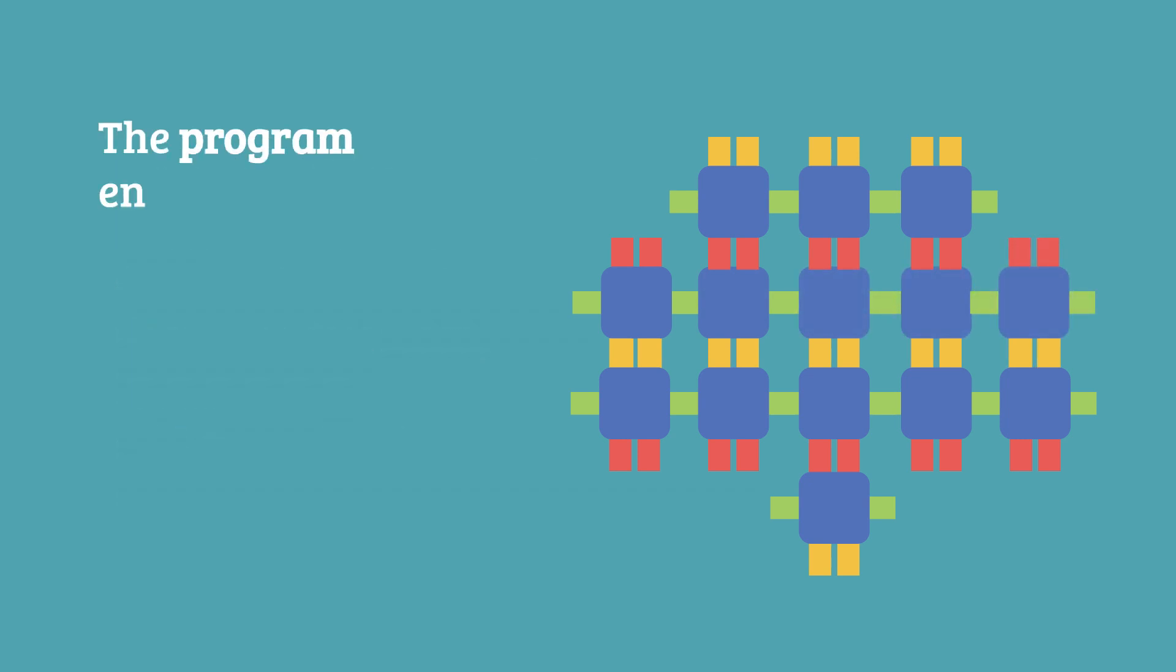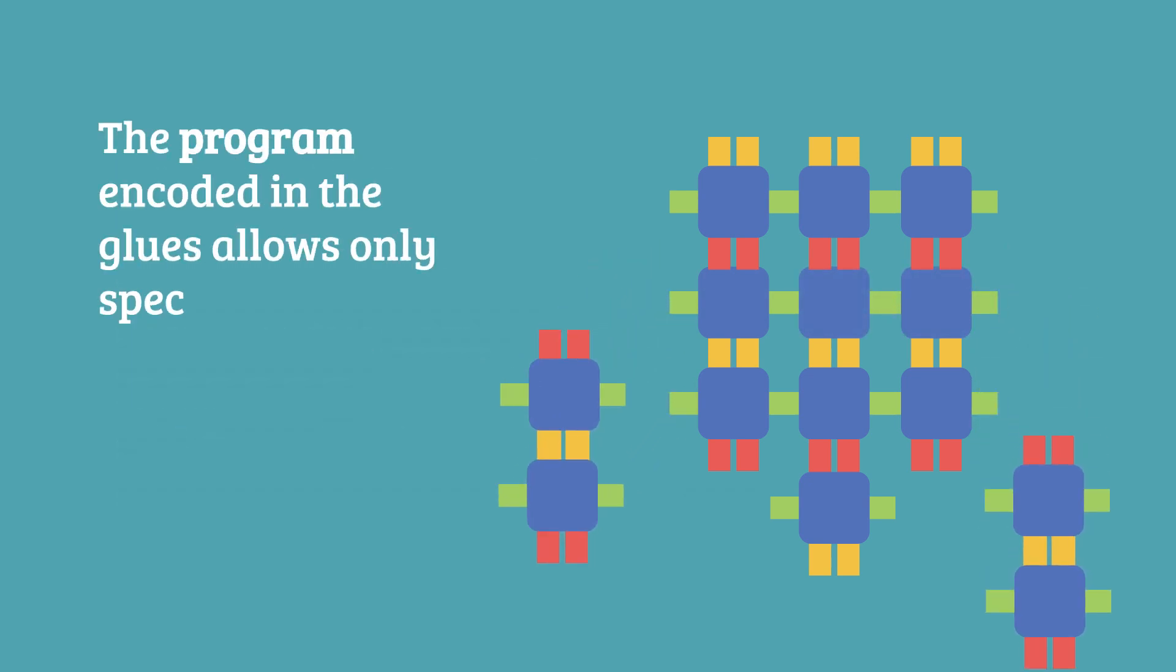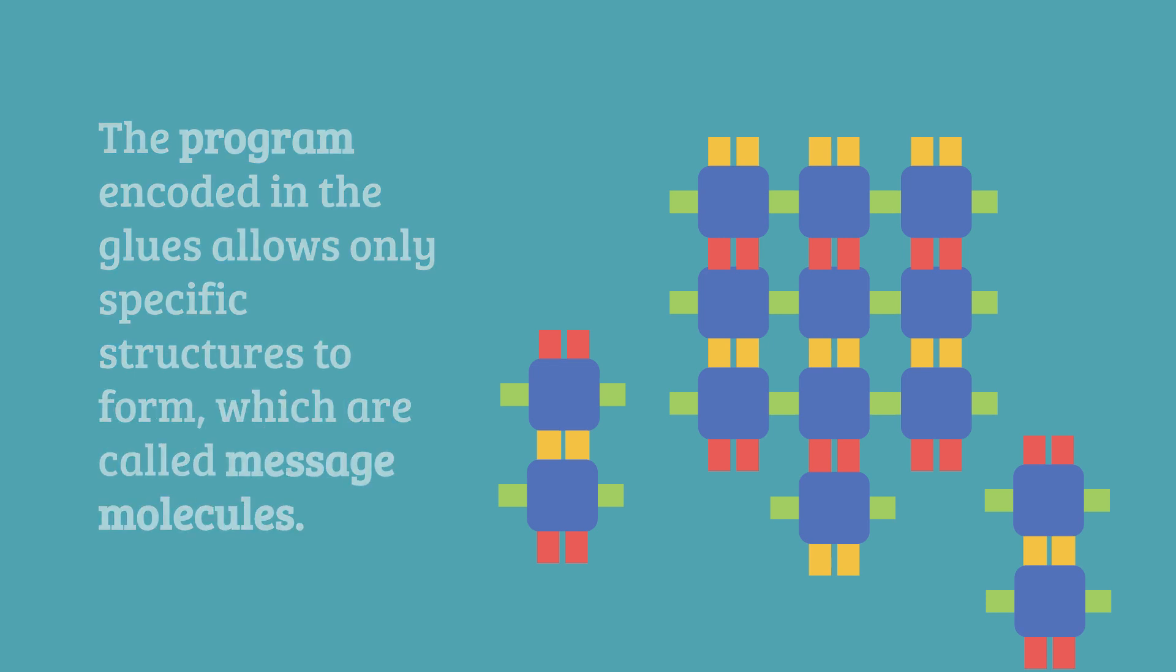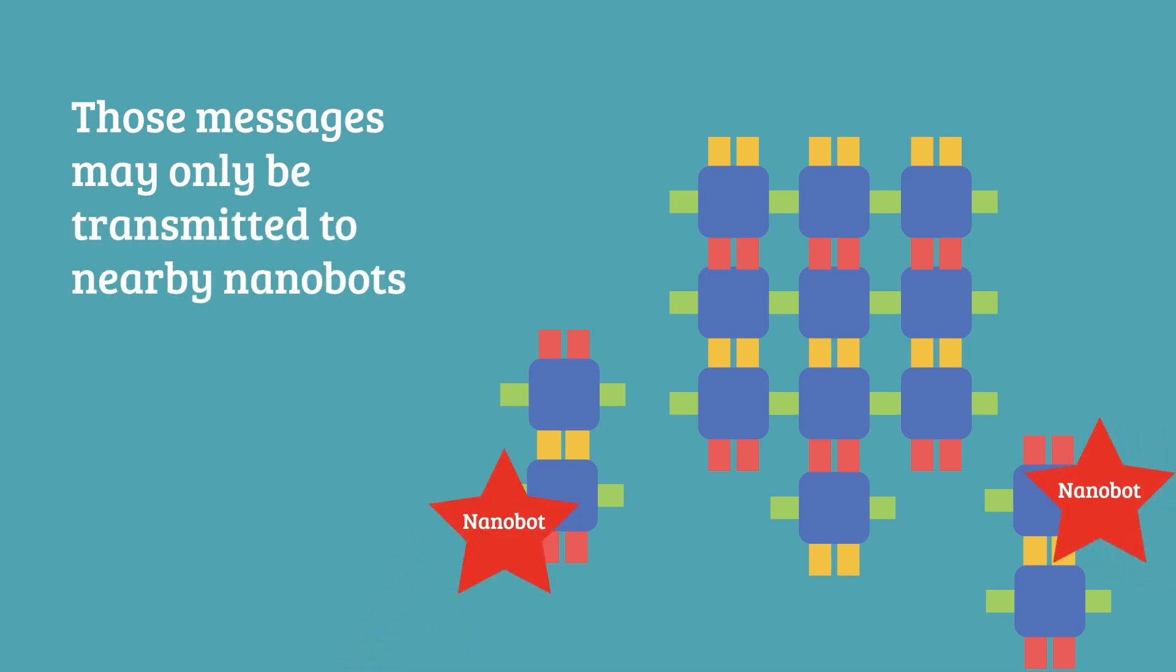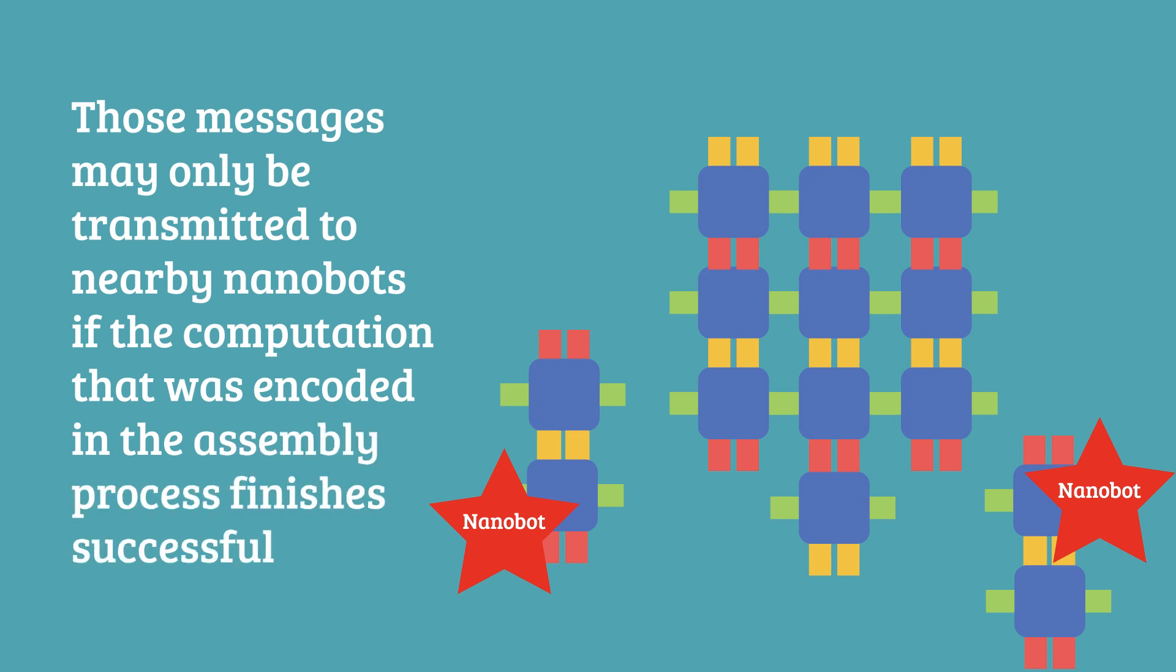The program encoded in the glues allows only specific structures to form, which are called message molecules. Those messages may only be transmitted to nearby nanobots if the computation that was encoded in the assembly process finishes successfully.